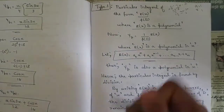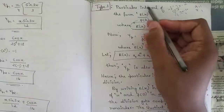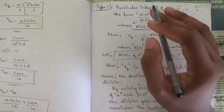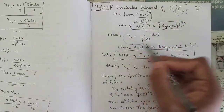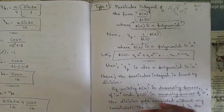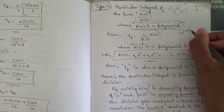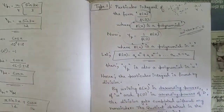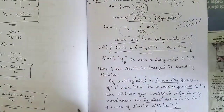In Type 3, r(x) is determined as a polynomial. The complementary function part remains the same in all cases. The particular integral formula is r(x) divided by f(D). Here r(x) is a polynomial — it can be a quadratic or cubic polynomial. The standard polynomial is ax² + bx + c, where a, b, c are constants.